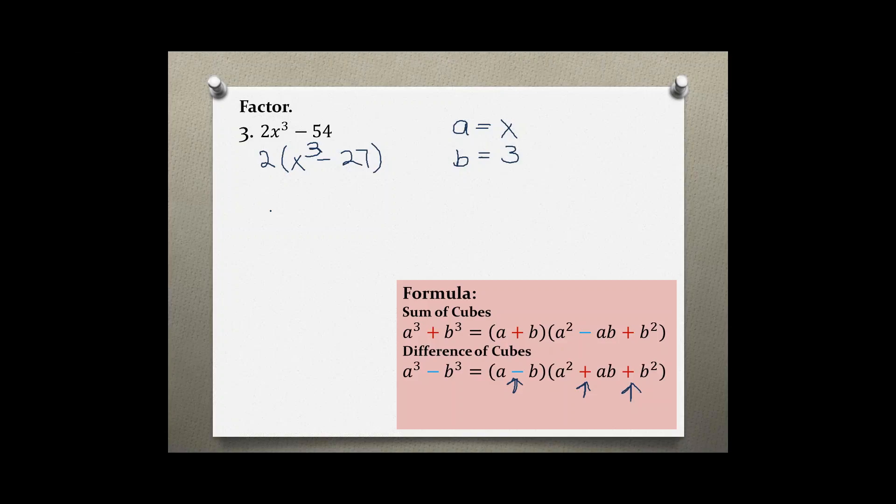Now we can plug in these values into our formula. So we start with x³ minus 3³, and that equals (x - 3)(x² + 3x + 9). That's a minus b, then a squared plus a times b, which is 3x, plus b squared, which is 3 times 3, or 9.